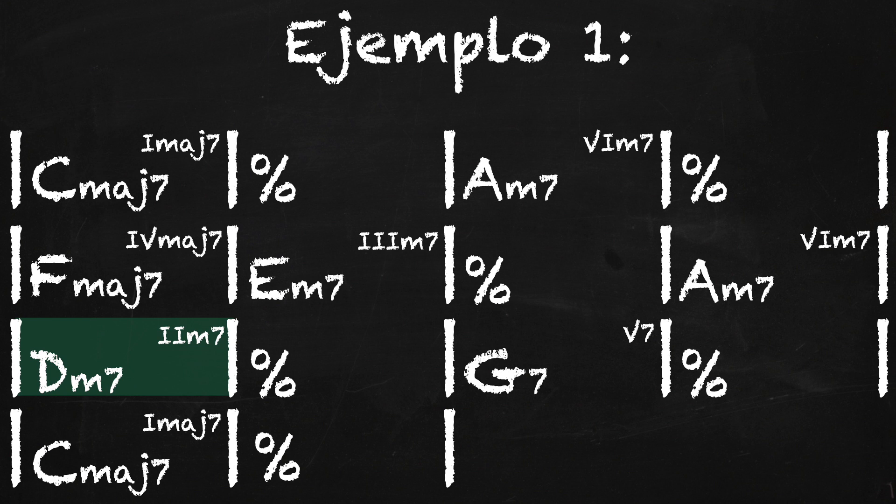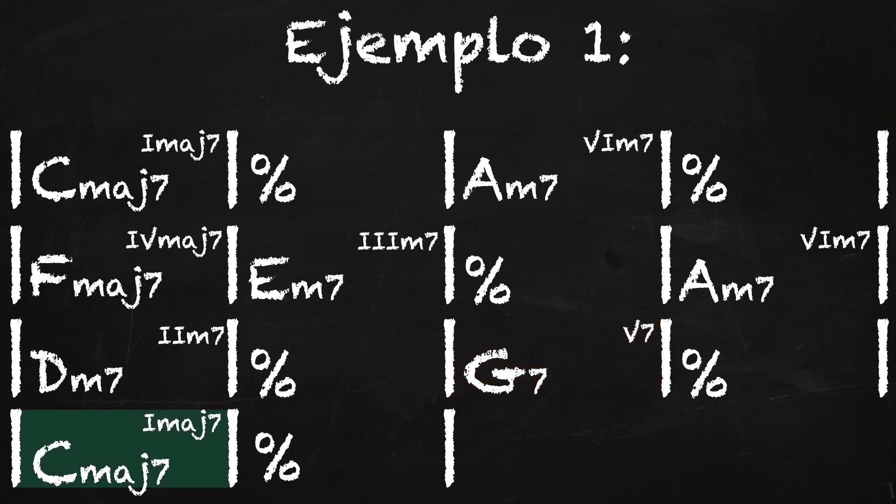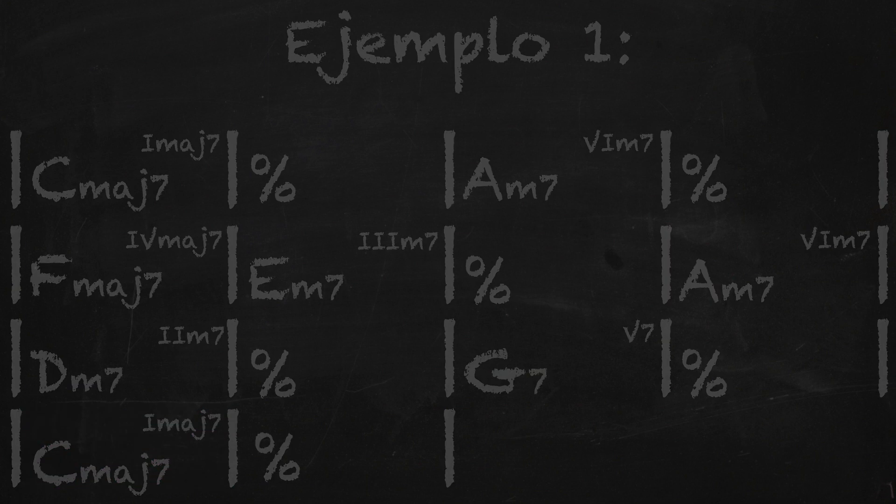Pero fíjate bien en el compás número 11 y 12, nos encontramos con un acorde de dominante: un Sol 7 que es el quinto grado de Do, y éste va a generar tal tensión que me va a pedir regresar otra vez a Do maj7 en los compases 13 y 14. Antes de ir con el ejemplo tocado de esta progresión armónica, te voy a hacer acuerdo que todos los acordes van a estar marcados en color verde, pero los dominantes van a estar en color rojo para poder divisarlos mucho mejor.